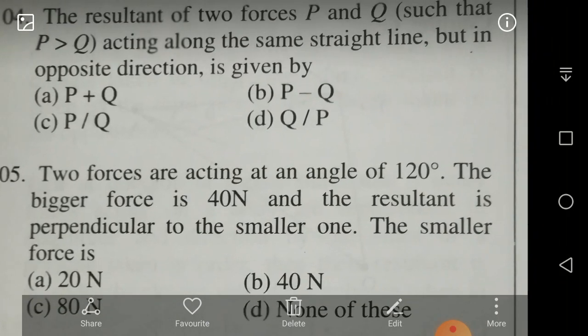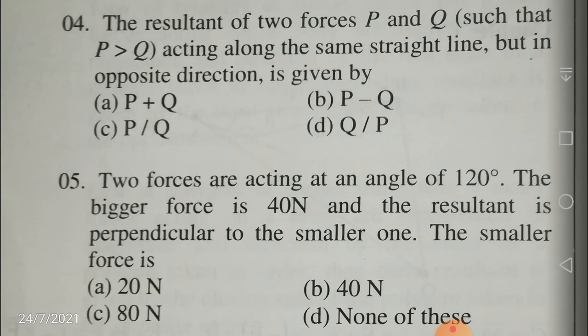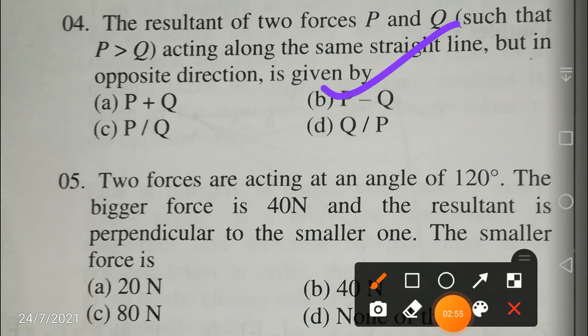Next question: the resultant of two forces P and Q, such that P is greater than Q, acting along the same straight line but in opposite direction. Since P is greater than Q and they act in opposite directions, the resultant should be P minus Q. If they were in the same direction it would be P plus Q, but because P is greater than Q and they act in opposite directions, the answer is P minus Q. Your answer is B.